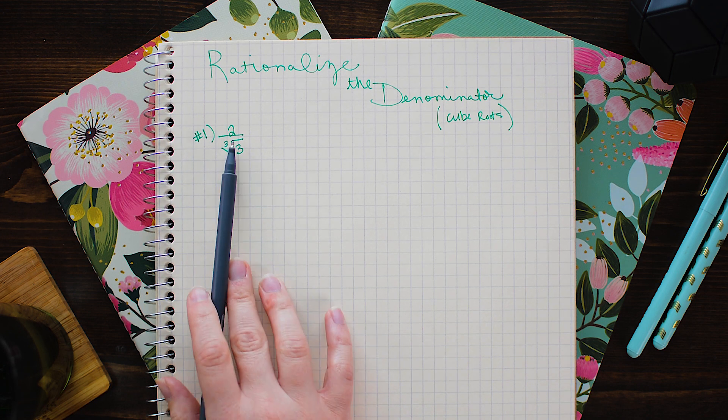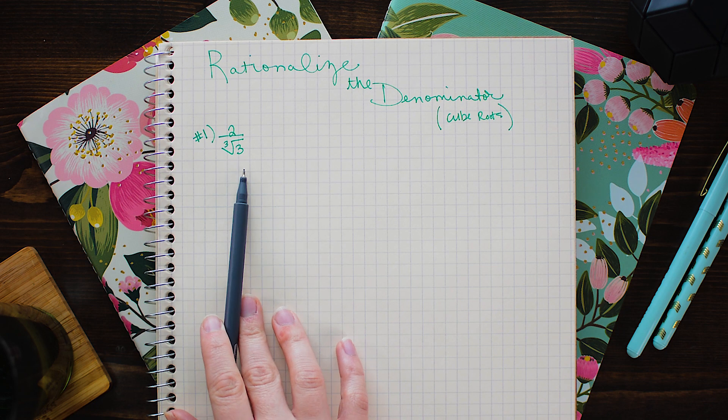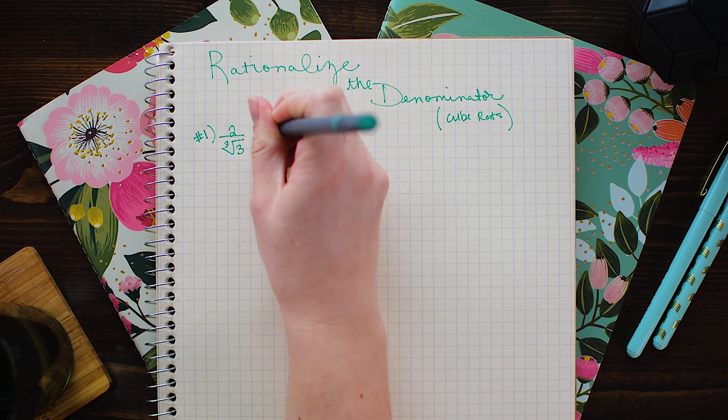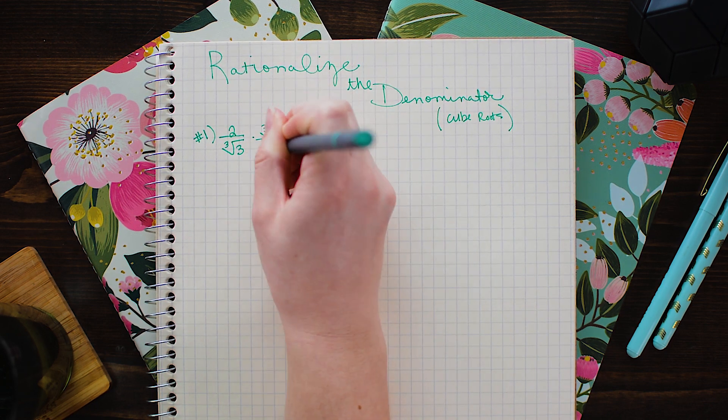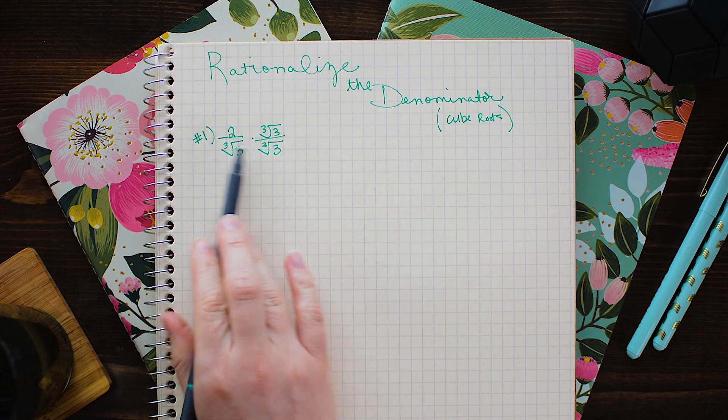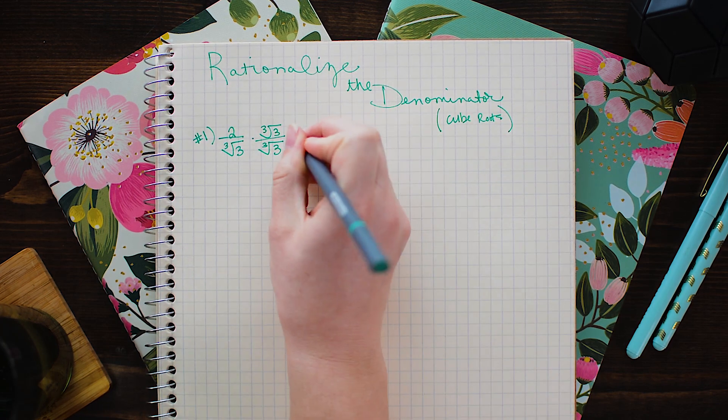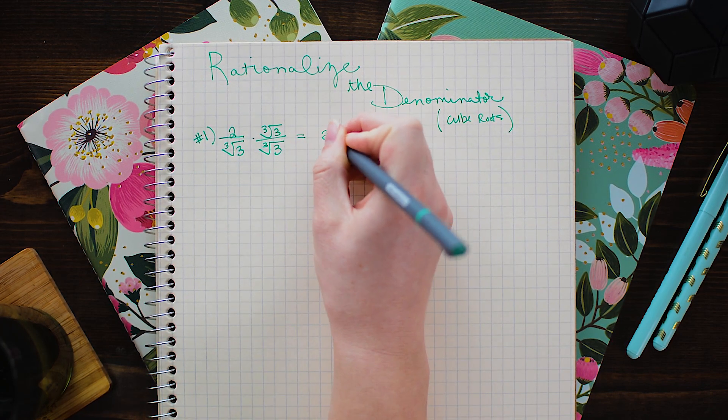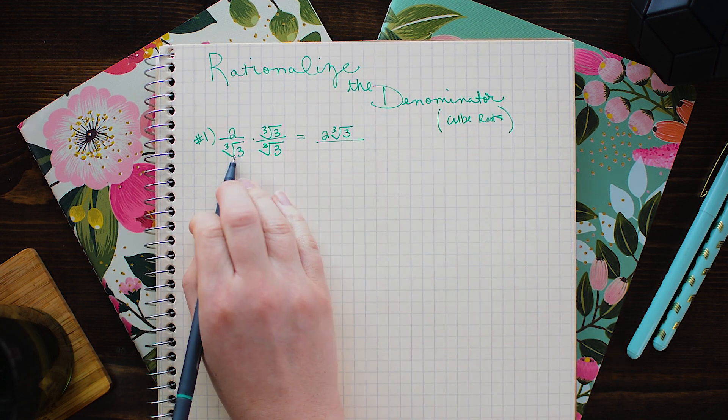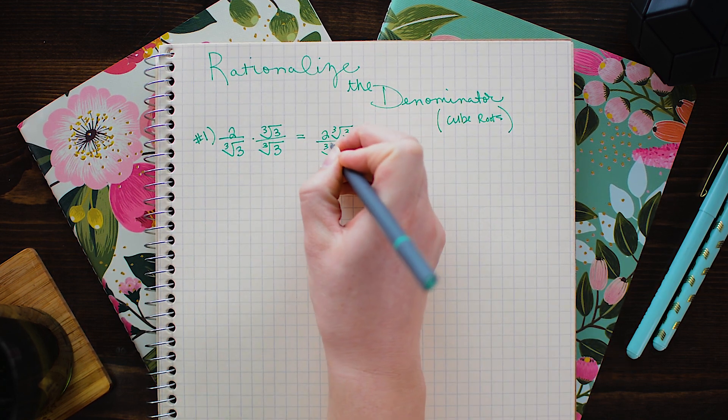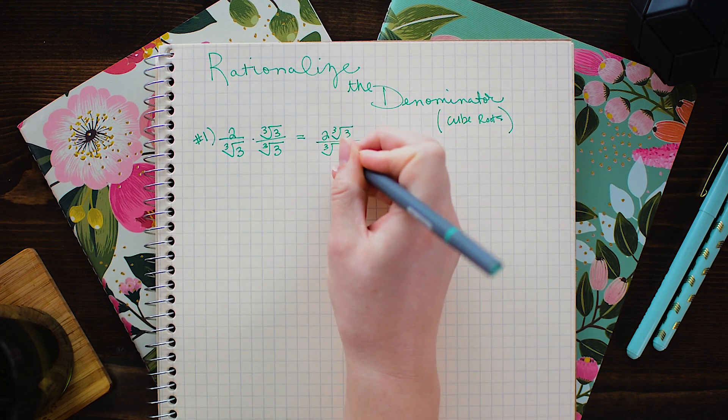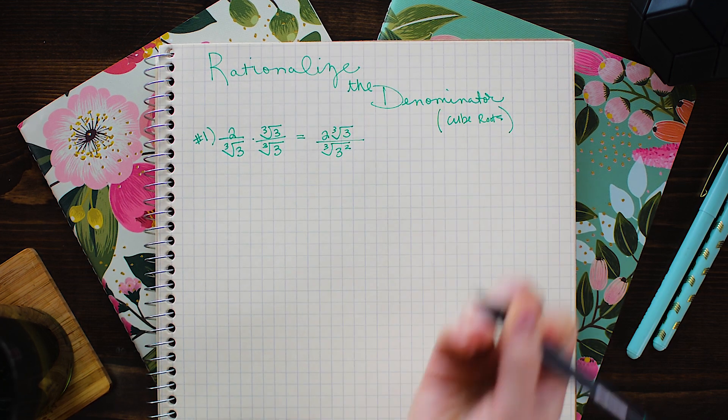Let's see what happens when I multiply 2 over cube root 3 by cube root 3 over cube root 3. When I do this I get 2 cube root 3 over the cube root of 3 times 3 which is 3 squared or 9.